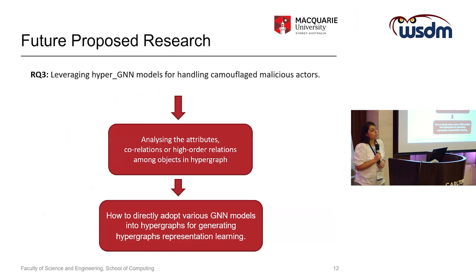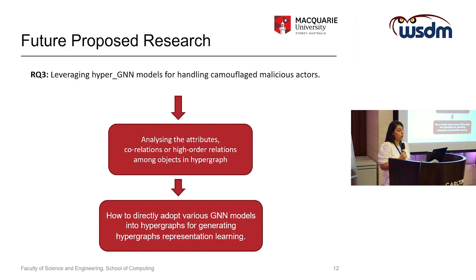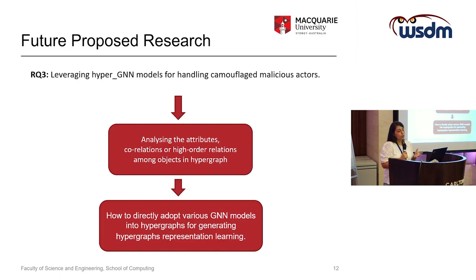For future proposed research, I am going to adapt hypergraph models for handling camouflage malicious actors. Hypergraphs can analyze attributes, correlations, or high-order relations among objects in graphs. We want to investigate how to directly adapt various GNN models into hypergraphs for generating hypergraph representation learning.